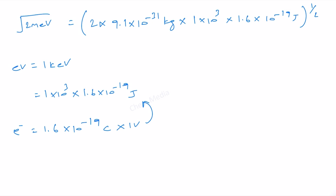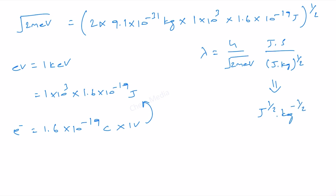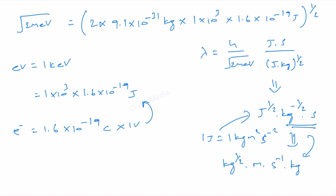Let us work on the units. In the numerator we have the Planck constant in joule seconds, and in the denominator we have square root of 2meV giving joules kg to the whole power 1 by 2. This becomes joules to the power 1 by 2, kg to the power minus 1 by 2, second. Since 1 joule equals 1 kilogram meter squared per second squared, substituting gives kg to the power 1 by 2, meter, per second, times kg to the power minus 1 by 2, times second. These cancel out, leaving only meter as the unit.